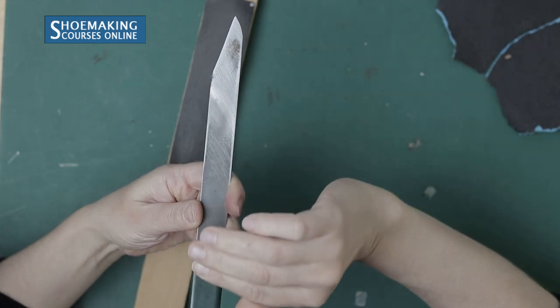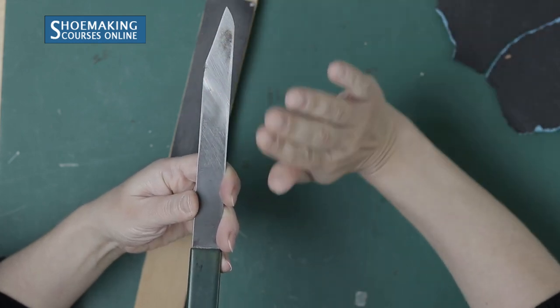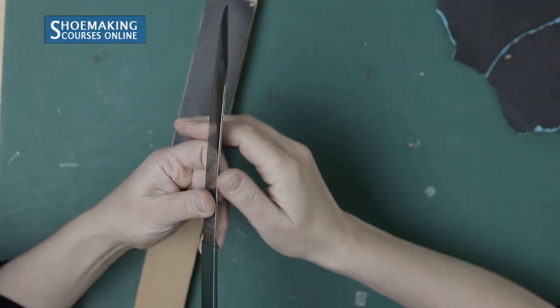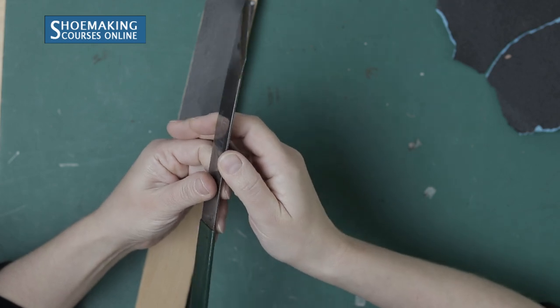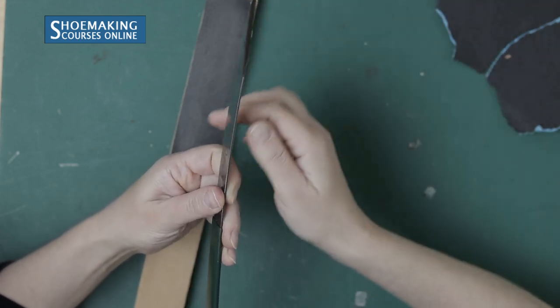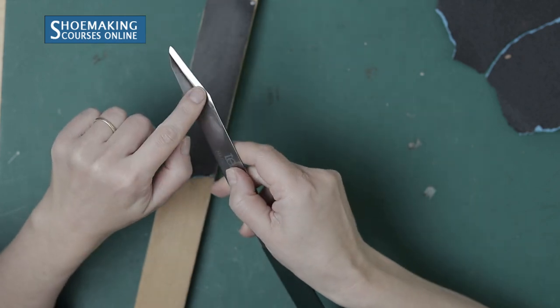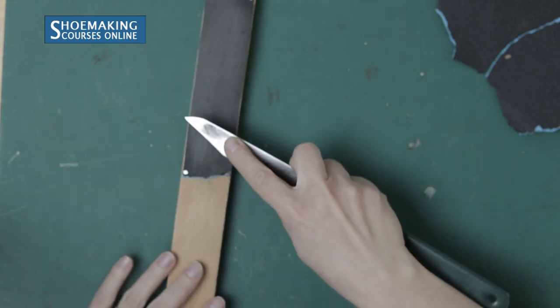Here we have one angle, and on the other side we have a straight angle without any inclination. When you will sharpen it, you should keep this knife along the same angles.